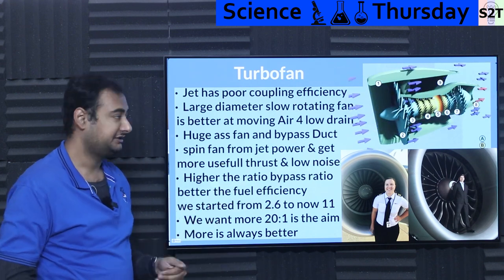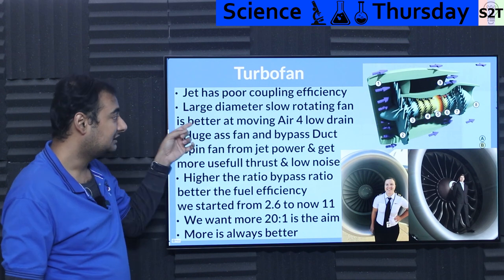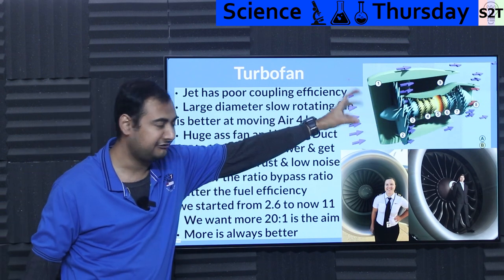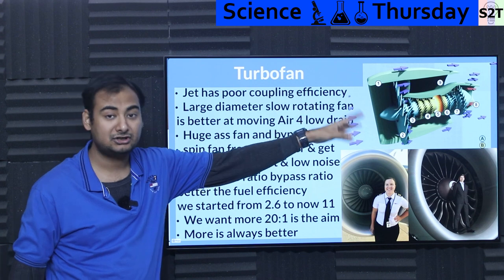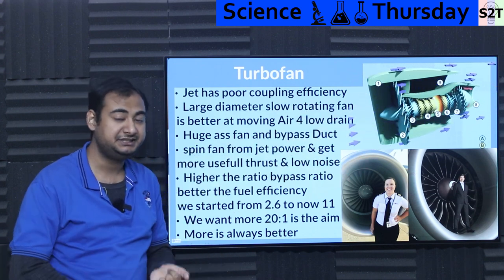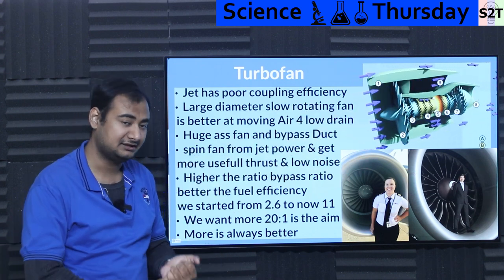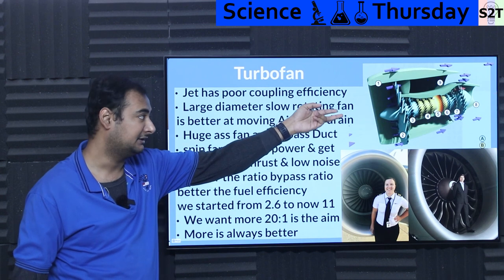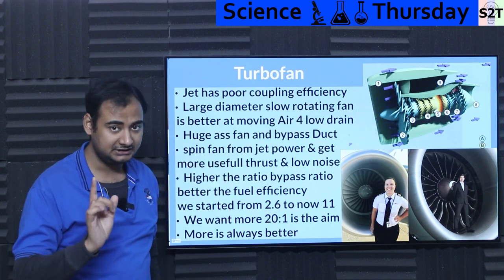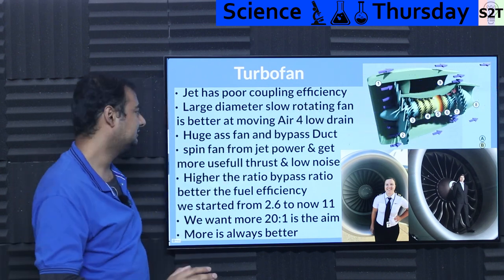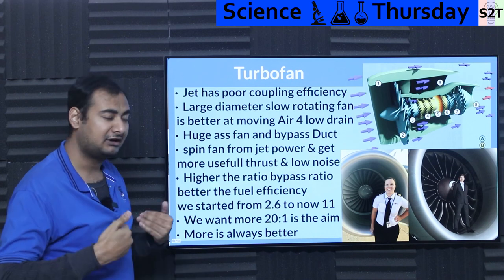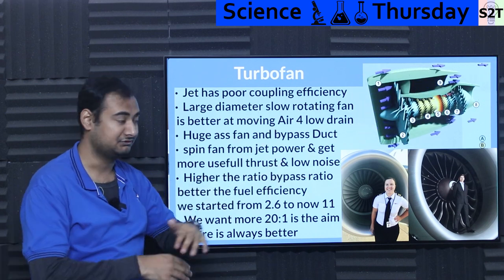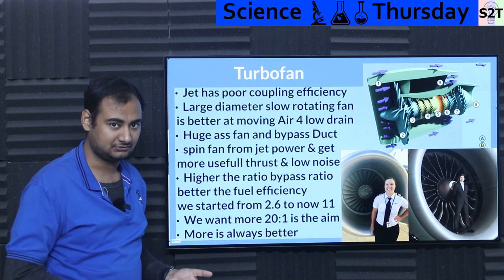The solution: a large diameter, slow rotating fan. If we can have a giant fan in front that is moving a lot more air, it extracts heat and pressure energy from the exhaust. Spinning a giant fan which moves a lot of air slowly gives far better forward momentum because this is a reaction engine — everything is about how much you can throw.